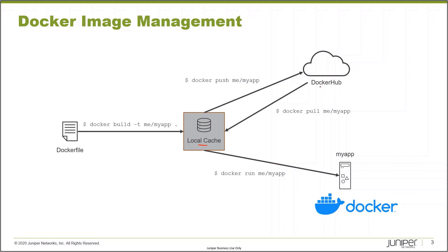Images can also be stored in Docker Hub, which is a cloud repository for Docker images. We can see the basic image management commands here. If we want to create a new image, we can build one based on a Dockerfile using the Docker build command. The dash-T argument allows me to set a tag on that image — the first part will be my account name on Docker Hub, and the second will be the unique name for that image, followed by the path to my files.